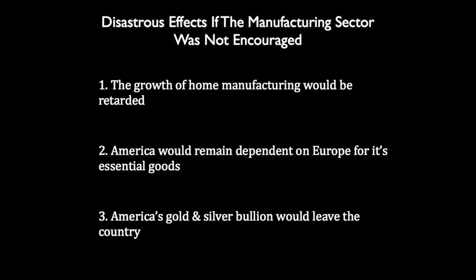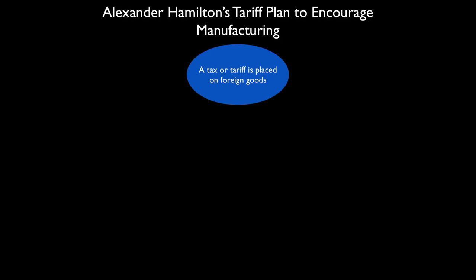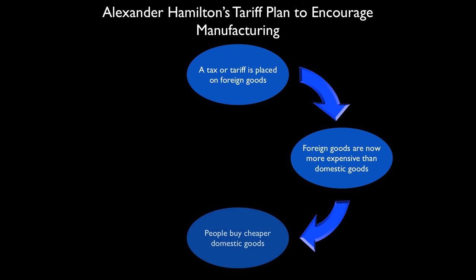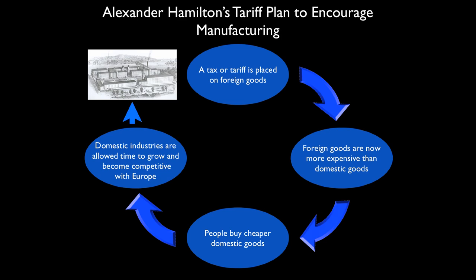To prevent these things from happening, Hamilton believed it necessary for the government to protect and aid domestic industry. This was to be accomplished by placing a tax or tariff on imported goods, which raised the price of foreign goods, making them more expensive than domestically produced items. People naturally bought the cheaper domestic items. In theory, this allowed domestic industry time to grow and become competitive with European manufacturing, allowing the United States to become independent of Europe and a prosperous nation in its own right.